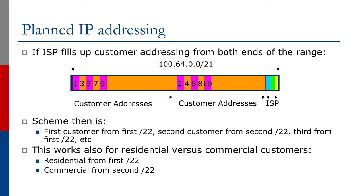Instead, we should be doing planned IP addressing. Rather than filling up the address space from one end of the range, we should divide the range into two — number the odd-numbered customers from one side, and the even-numbered customers on the other side, for example. In a /21, we announce the aggregate /21 on both external links, announce one /22 on one link, and the other /22 on the other link.